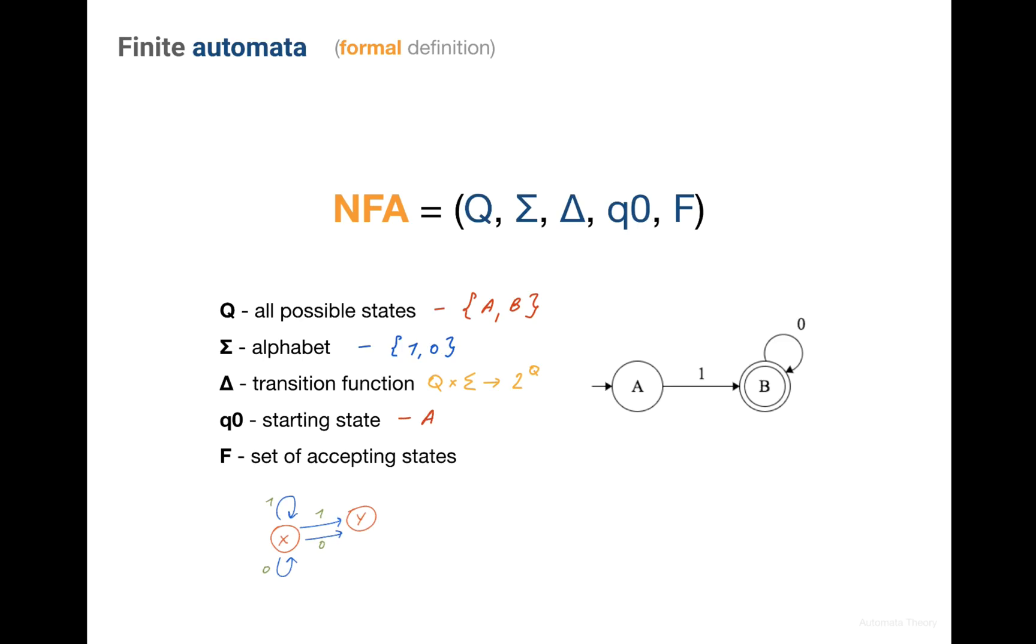q0 is the starting state, that is the state we start our analysis from, and F is the set of accepted states. Recall those states are double-circled, and if after state transitions we end up in one of the acceptance states, we accept the string.